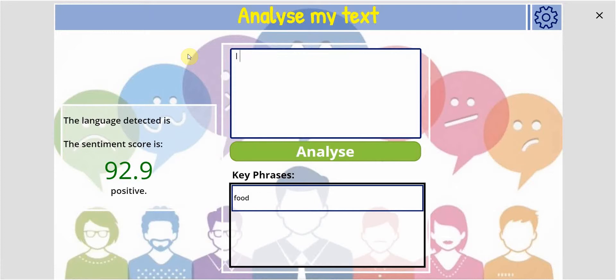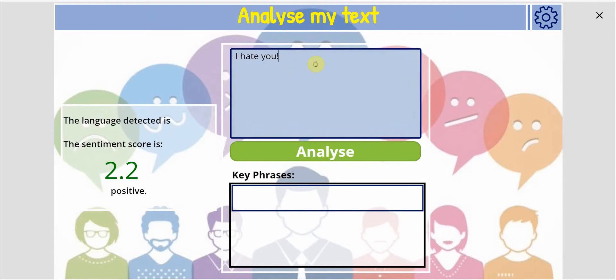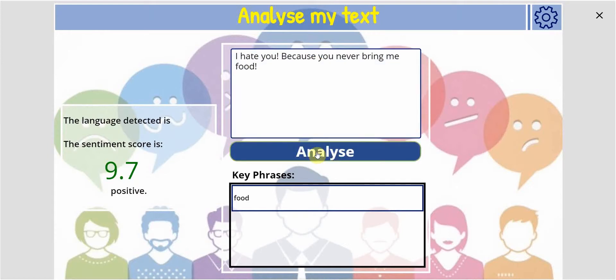Now, if we start shaking this up and go 'I hate you', let's see what happens to that sentiment score — it's only 2.2% positive. And we can back it up further: 'because you never bring me food.' So it's got up to 9.7%, but it's because we backed it up. The key phrase here is food, and the sentiment score is low — so there's something connected there.